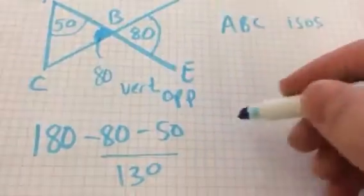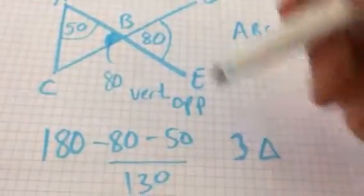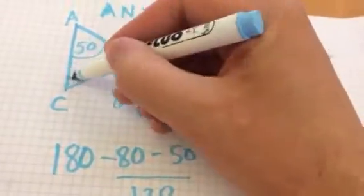Take away from 180 because of what? Three angles in a triangle. Yeah. Add up to 180. So that makes this angle here 50 degrees.